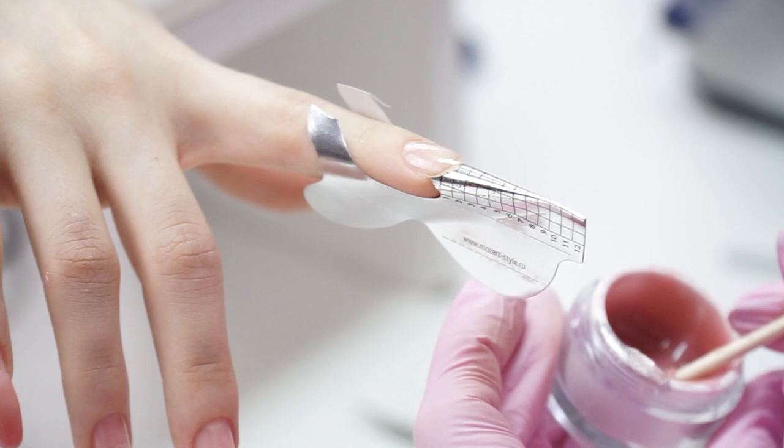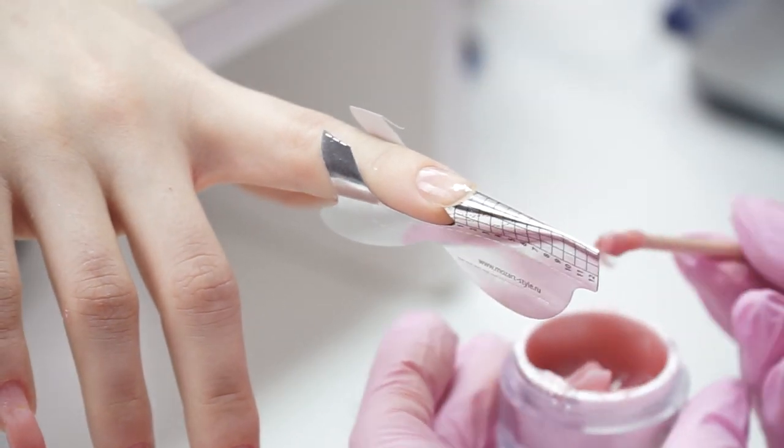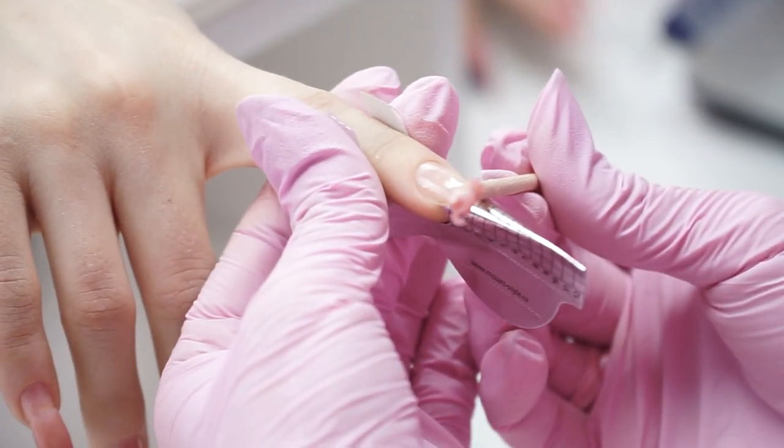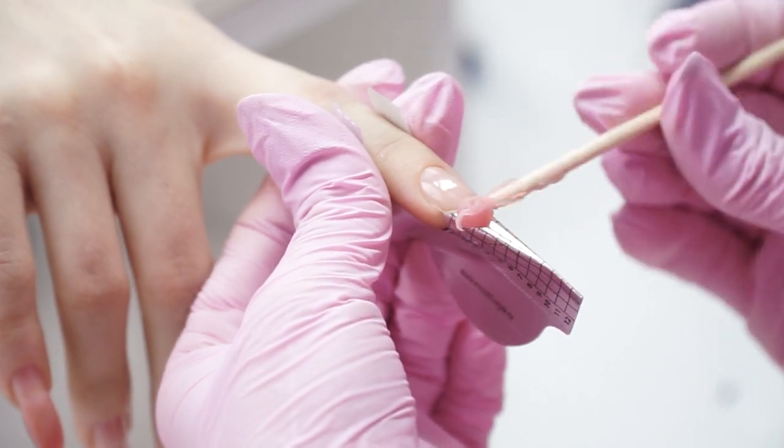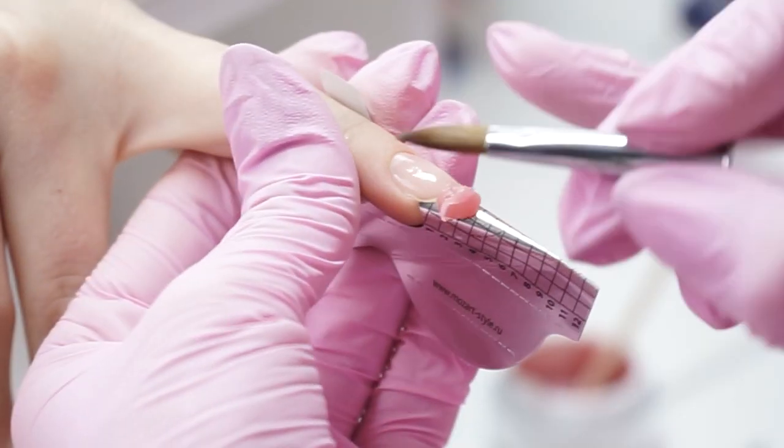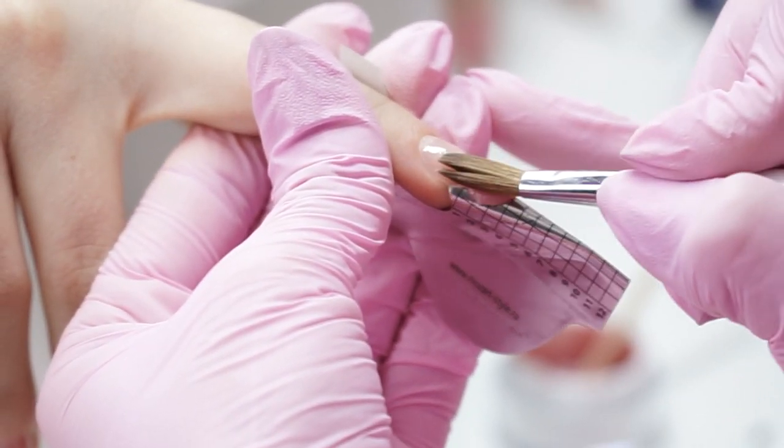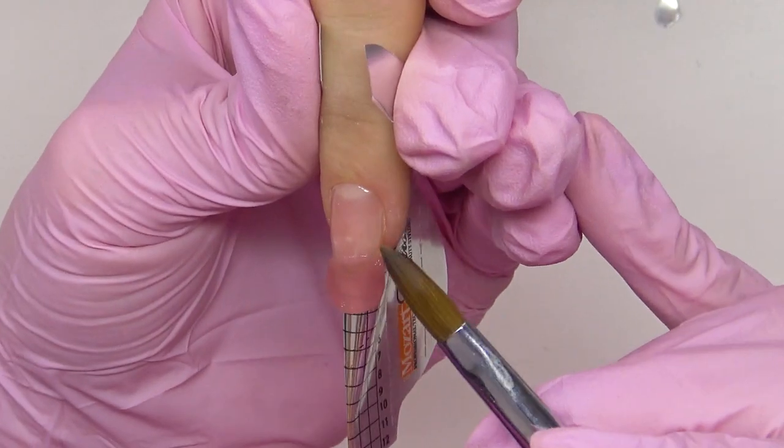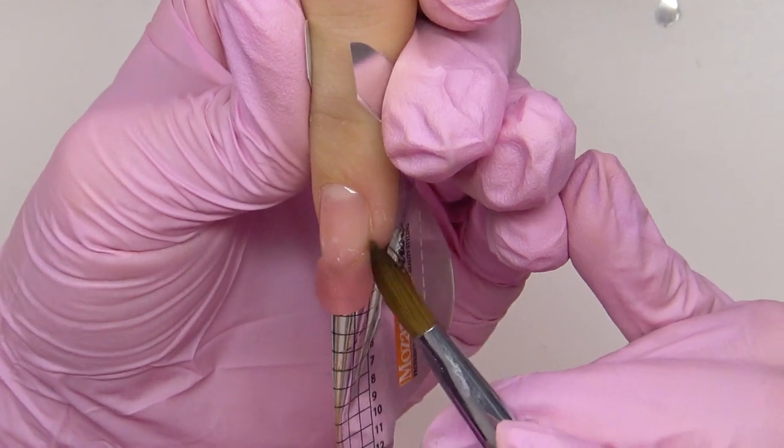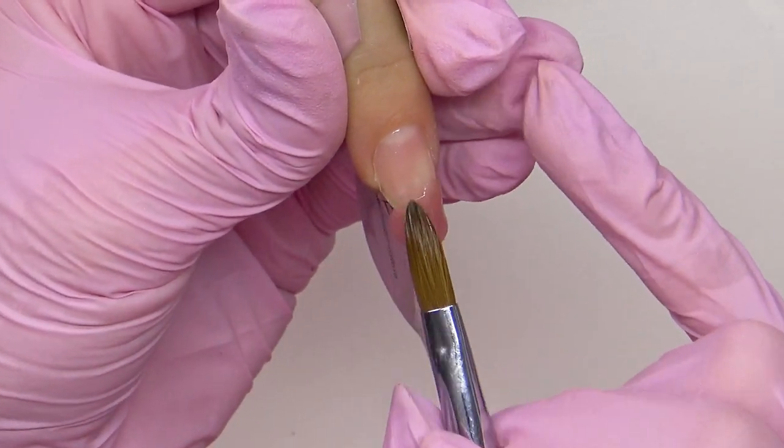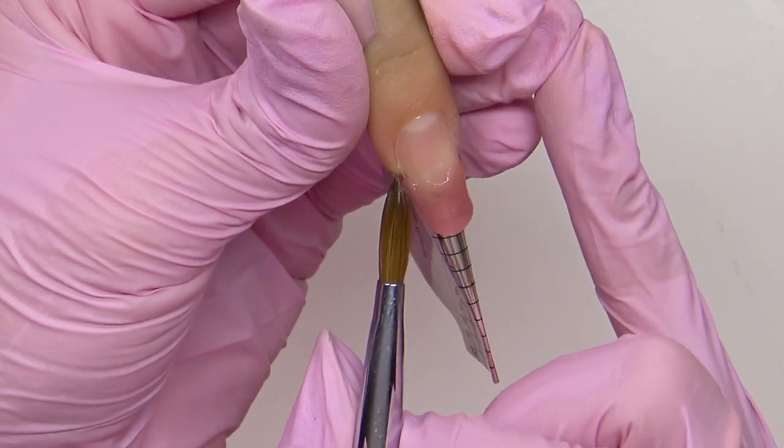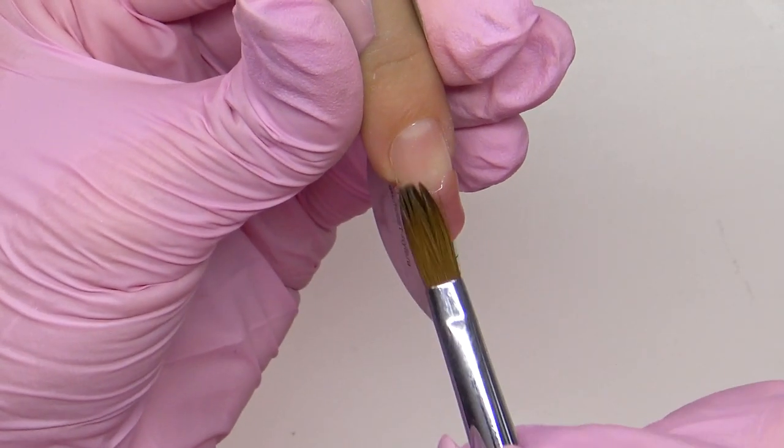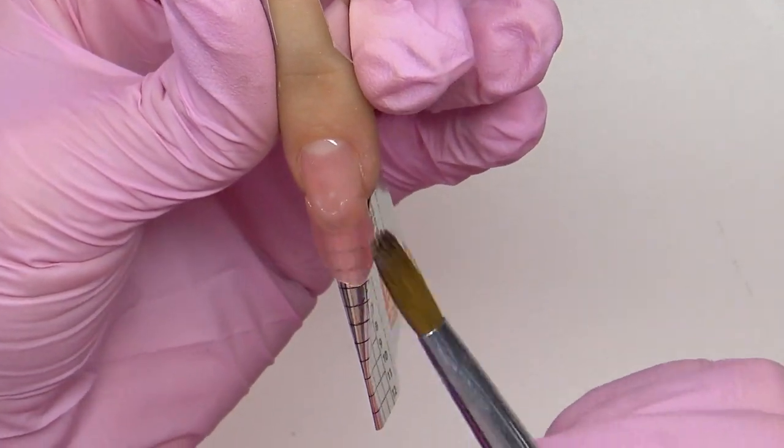Using Acra Gel, I will only form the free edge. In the area near the cuticle, I will build up the architecture using gel. I'm grabbing a drop of Acra Gel and spread it to the sides, to the right and to the left. With the flat side of the brush, I'm pulling the material towards me.